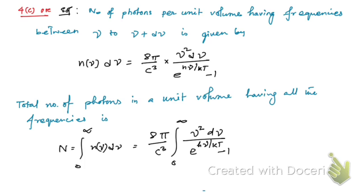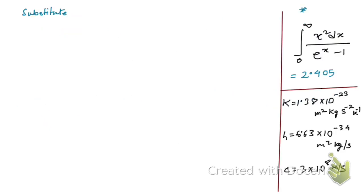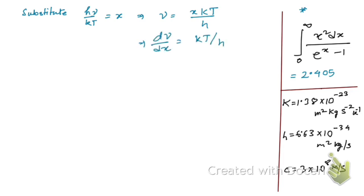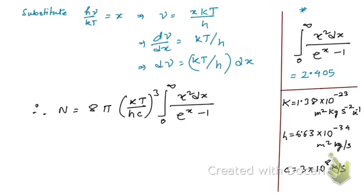Now we substitute: let hν/kT = x. Differentiating both sides with respect to x, we get dν = (kT/h) dx. We substitute this into the relation obtained in the previous slide to simplify the integral.